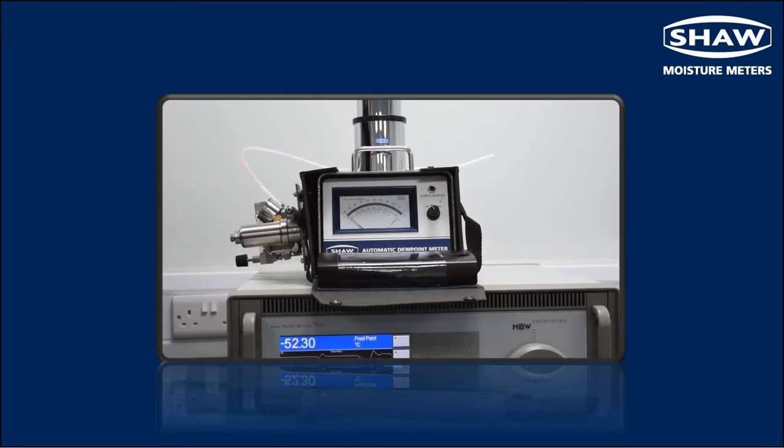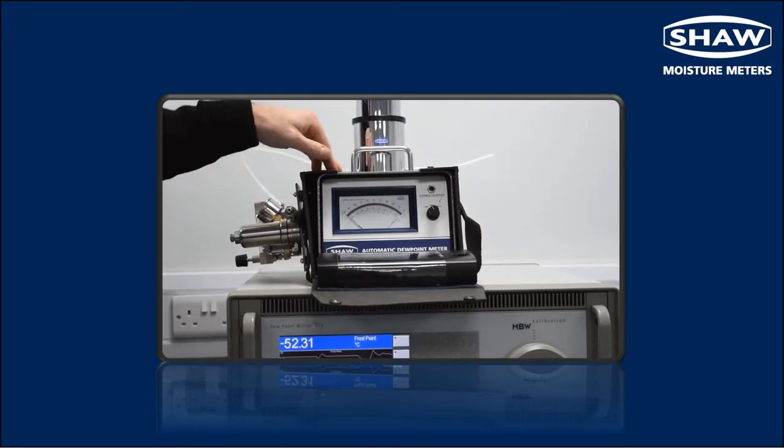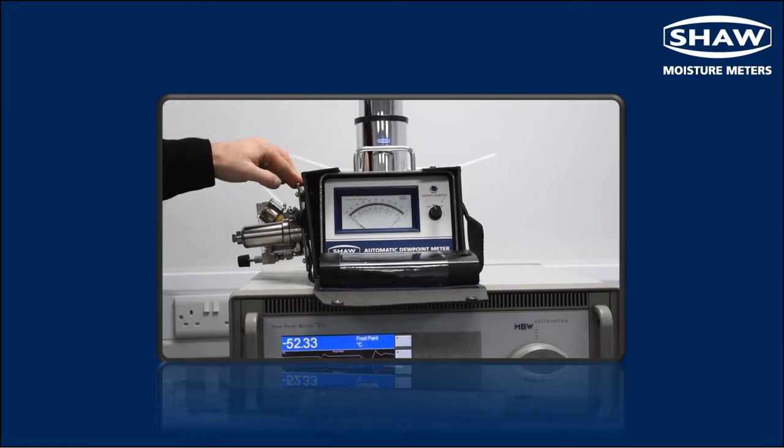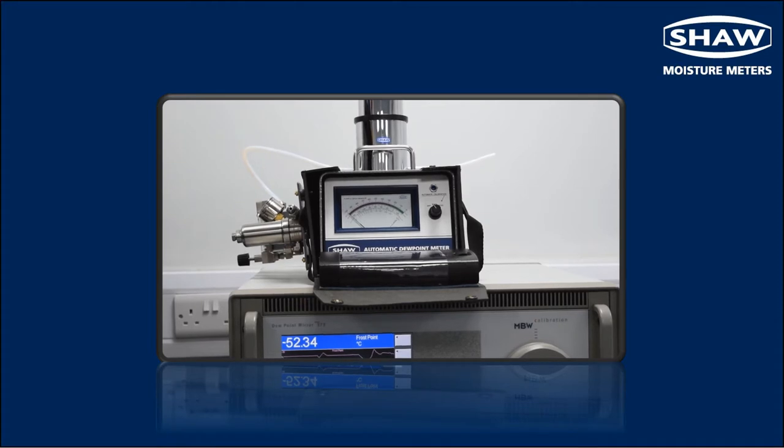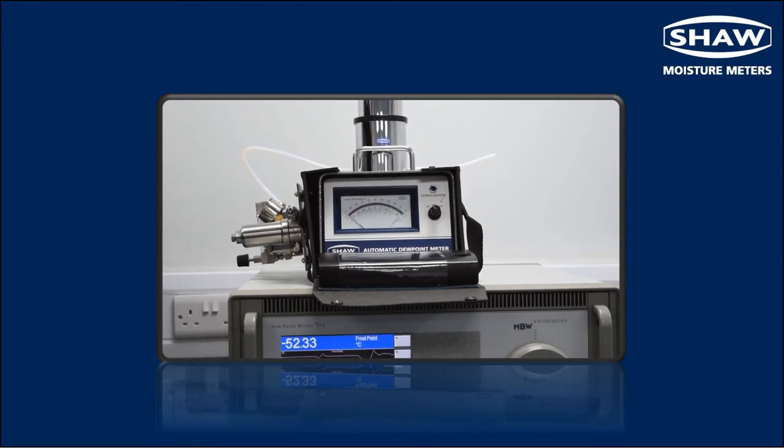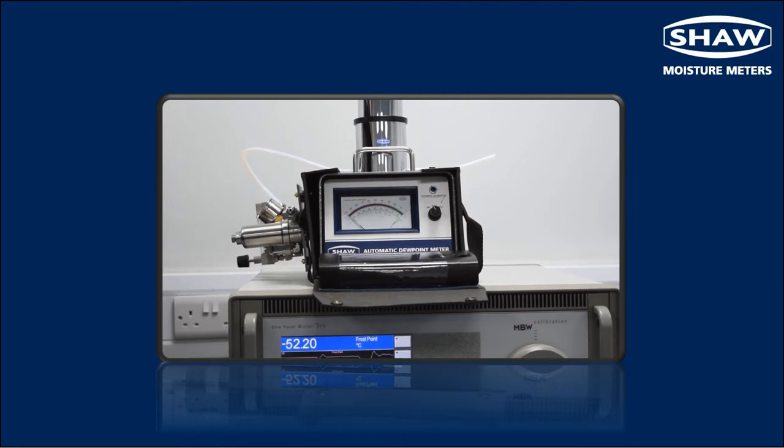Before we start using the SADP dew point meter with the SU3 sample panel, we first need to purge the system. So in industrial plants where sample lines are often isolated for long periods of time, it's important for us to purge those lines before we connect them to the SU3 sample system.